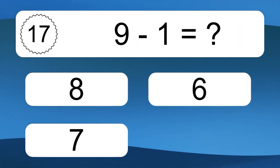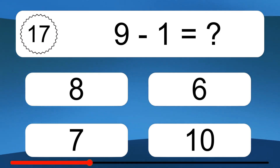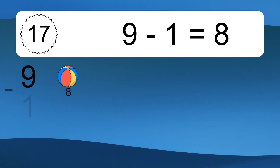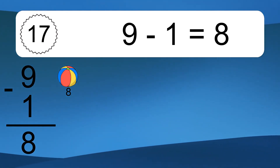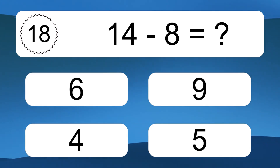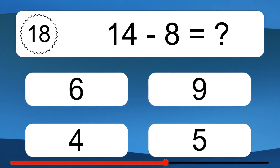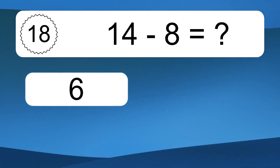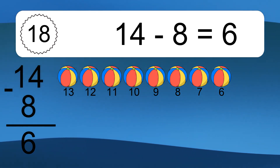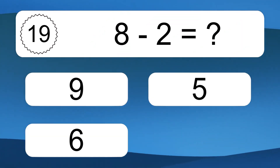9 minus 1 equals what? 9 minus 1 equals 8. Let's count it. 14 minus 8 equals what? 14 minus 8 equals 6. Let's count it: 13, 12, 11, 10, 9, 8, 7, 6.